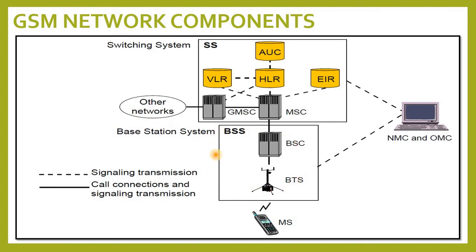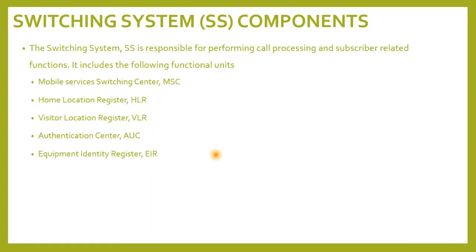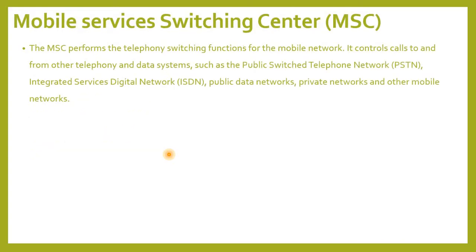The Switching System (SS) is responsible for performing call processing and subscriber-related functions. It includes the following functional units: Mobile Services Switching Center (MSC), Home Location Register (HLR), Visitor Location Register (VLR), Authentication Center (AUC), and Equipment Identity Register (EIR).